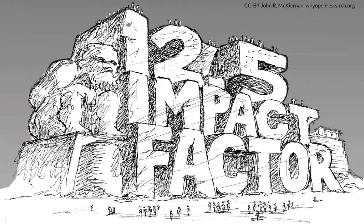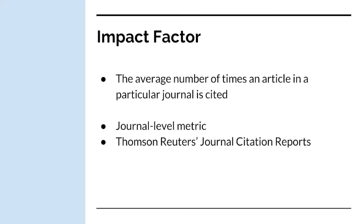Impact factor is a metric at the journal level and is not actually a reflection on the individual article or researcher. It was originally designed to trace the history of ideas and is now measured based on the frequency with which an average article in a journal has been cited in a particular year. The official impact factor is calculated by Thomson Reuters' Journal Citation Reports and is often tied to how researchers perceive the reputation of a journal. However, impact factor cannot reflect the quality of a journal or represent the impact of your individual article.